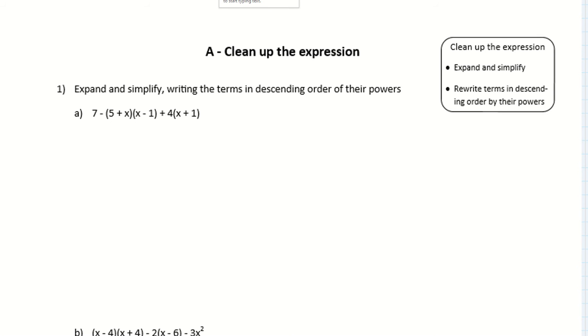Alright, in this video we're going to key on the first part of that process that I talked about in the introduction, that is cleaning up the expression. Okay, so here we've got an expression where there's a couple of things to expand. There's a binomial times a binomial, so we're going to FOIL that out. And then there's also just a regular number that has to be distributed into that bracket.